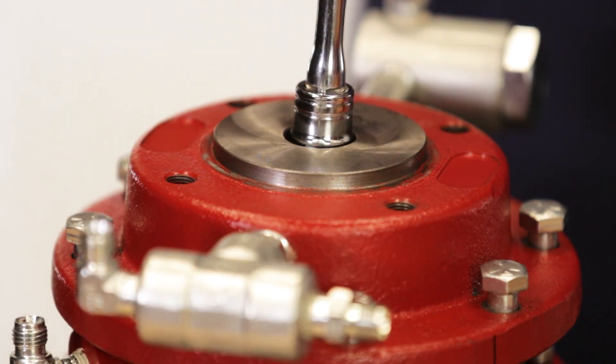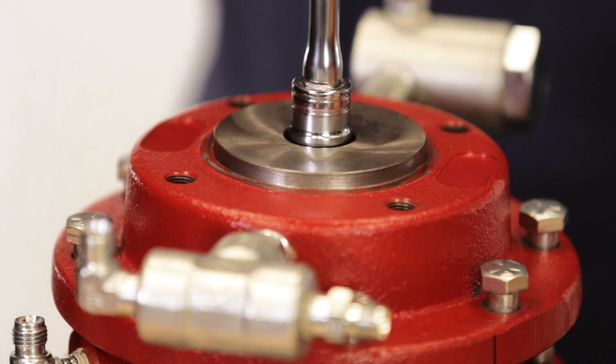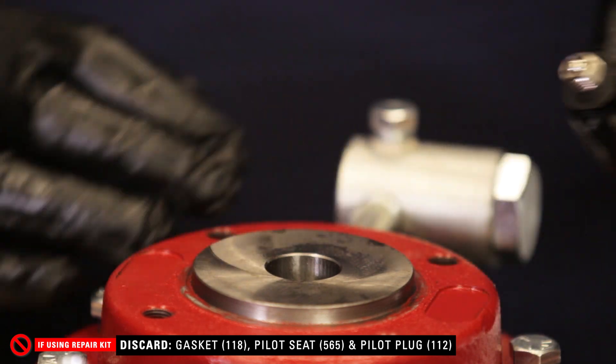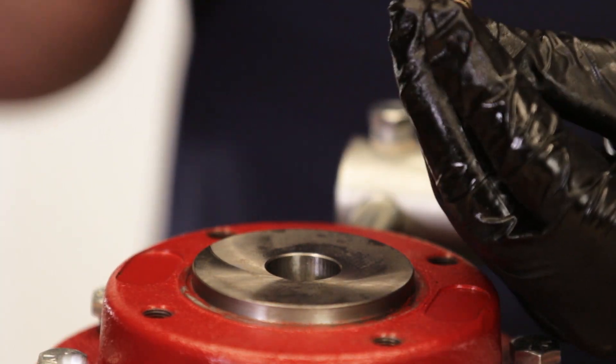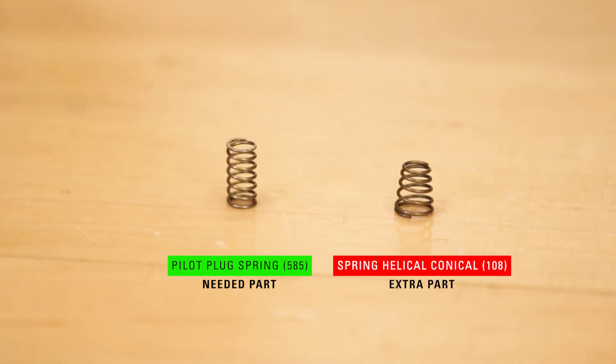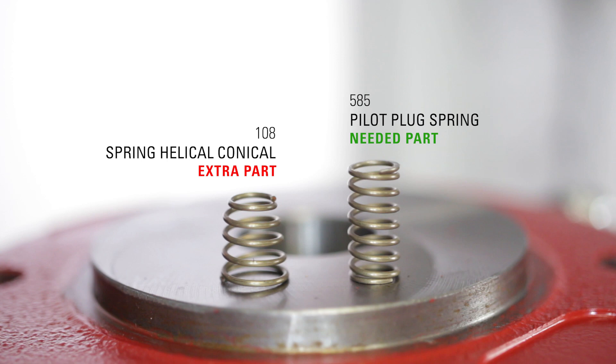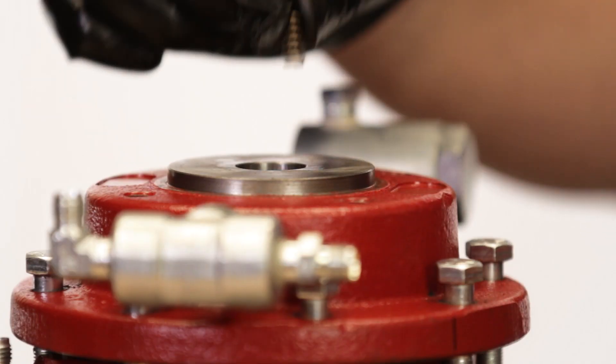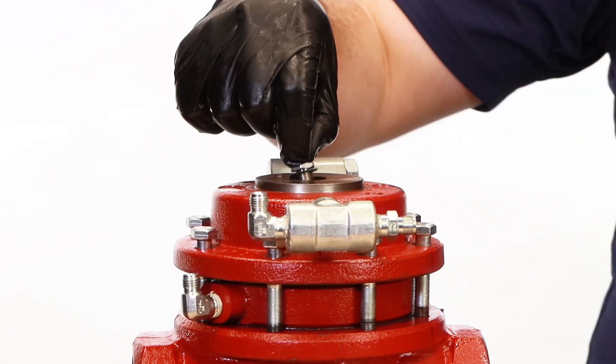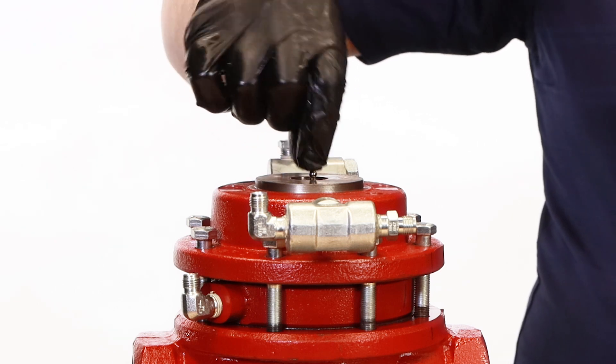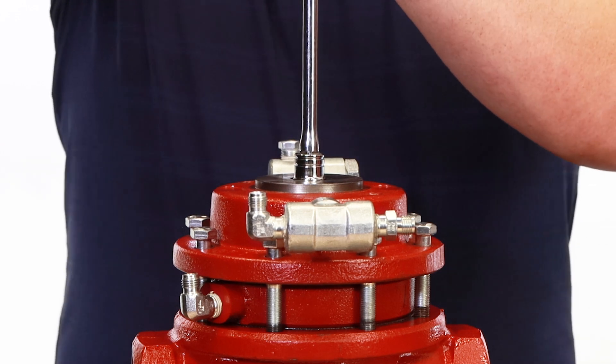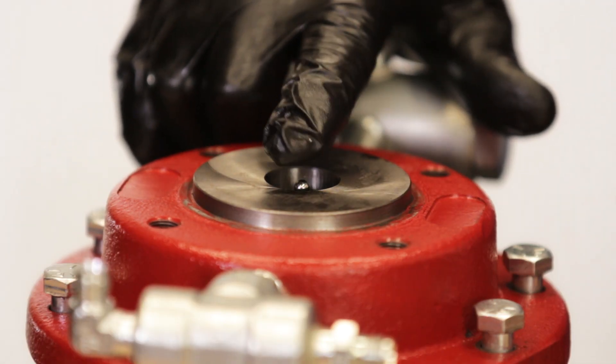Use a 9/16ths socket to remove the pilot seat. Inspect the gasket for damage. Use a pick to remove the pilot spring and set it aside. This will also be an extra piece. Put in the new pilot plug spring. Hold the pilot plug assembly by the ball of the pilot plug to keep it together while you thread on the assembly by hand. Then fully tighten it with a socket wrench. Verify that the pilot plug can move freely before continuing.